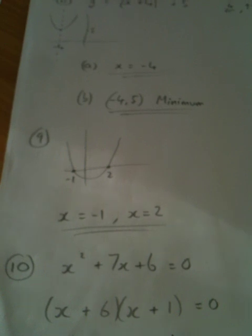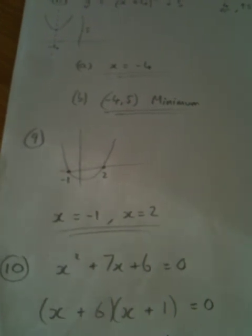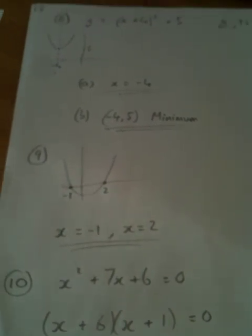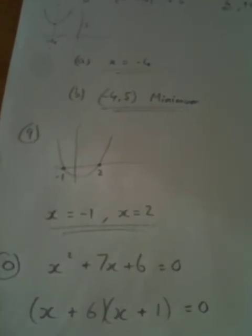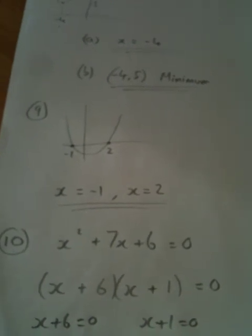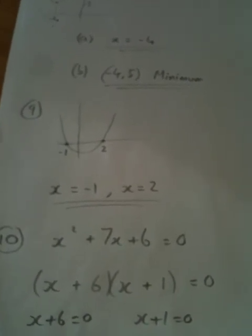So the outside and inside terms will be 6x and x. Add them together, we'll get the 7x. So we know we've got it correct. So that's it factorized. That'll be the first mark.